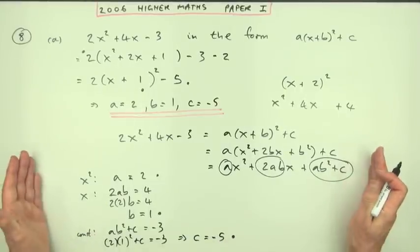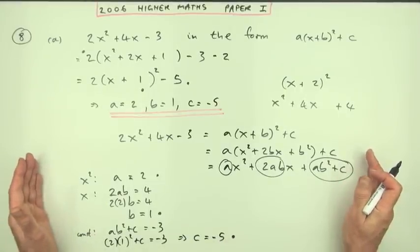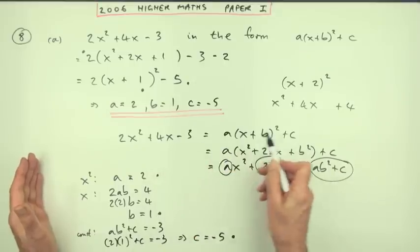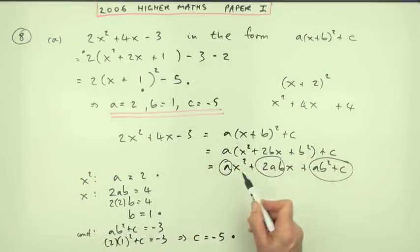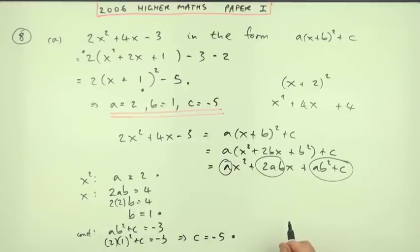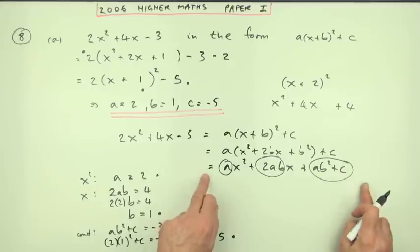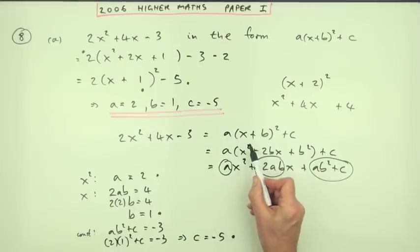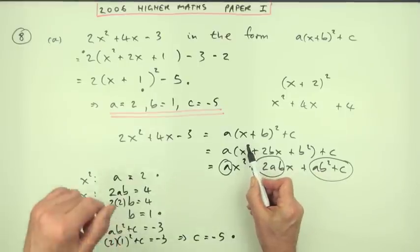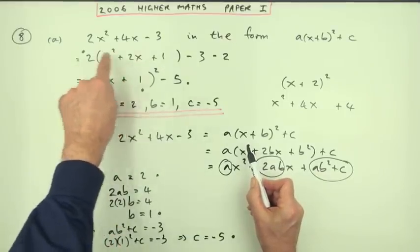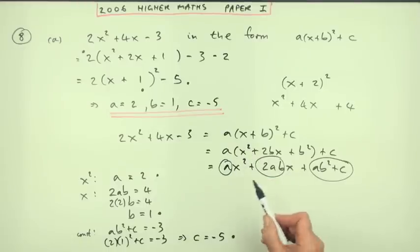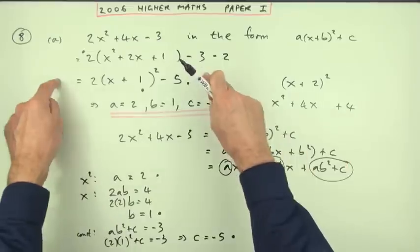You can use that technique — equating coefficients — to complete the square any time, just by expanding the required form into a quadratic and comparing coefficients. Generally it's longer to do it this way, but sometimes it may be easier if the numbers involved are nasty — negatives and fractions and so on. There's always an alternative.